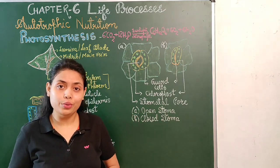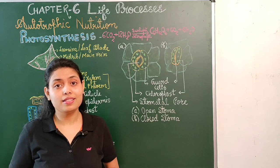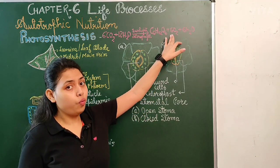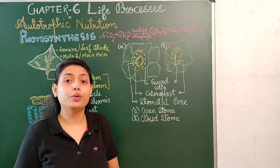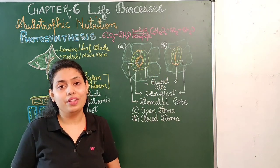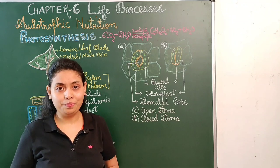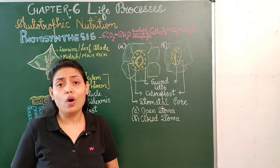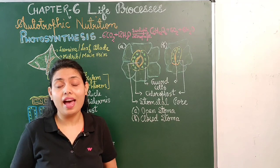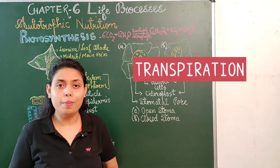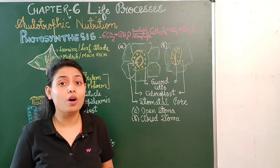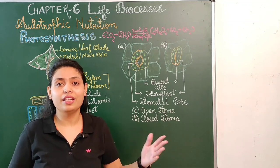The byproducts produced during photosynthesis are six molecules of water and six molecules of oxygen — these are released into the air. The loss of water from the plant through the leaves is known as transpiration. Remember this word, as we will be studying about it in detail in later videos.